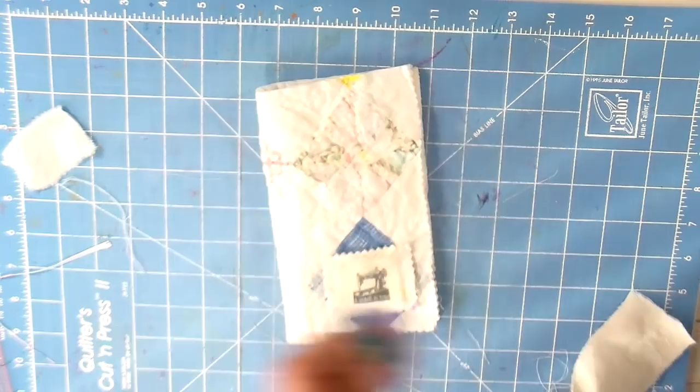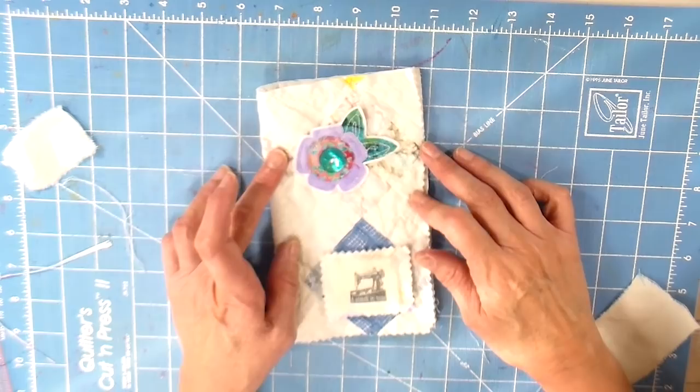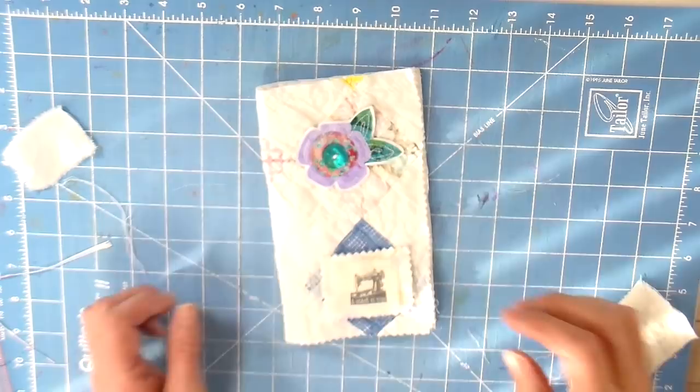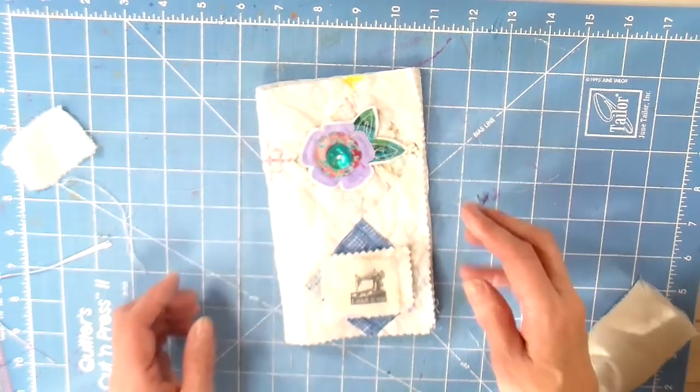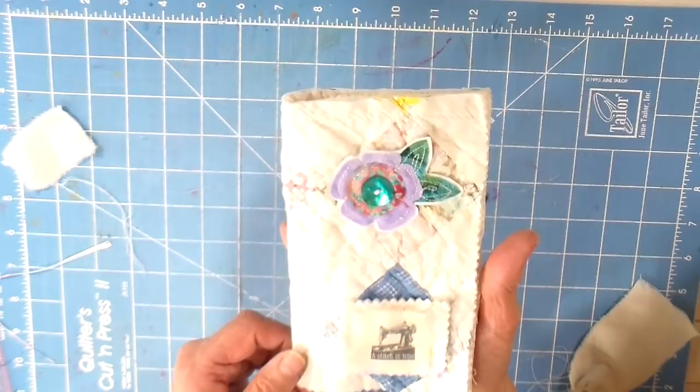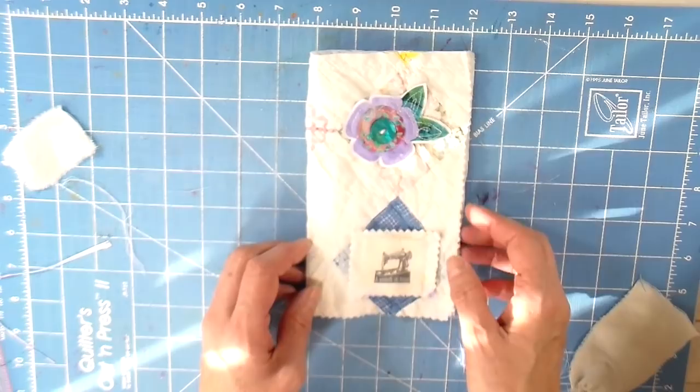I'm going to sew that on to cover that hole. I have these embellishments in my Etsy store. All my Etsy store items are on sale for 20% off through the end of November, so if you're interested, the link will be down below. I have these little fabric embellishments, and I made these in a video I'll also link down below.